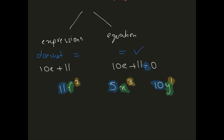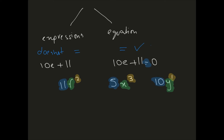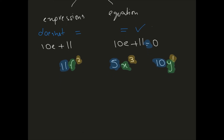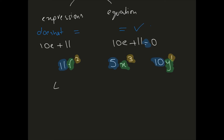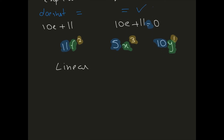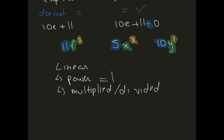Now we have linear expressions or equations. For something to be linear, the power on every variable must be exactly 1 — it cannot be less than 1 or more than 1. Additionally, the variables must not be multiplied or divided by each other. If both these conditions are fulfilled, it is a linear equation.